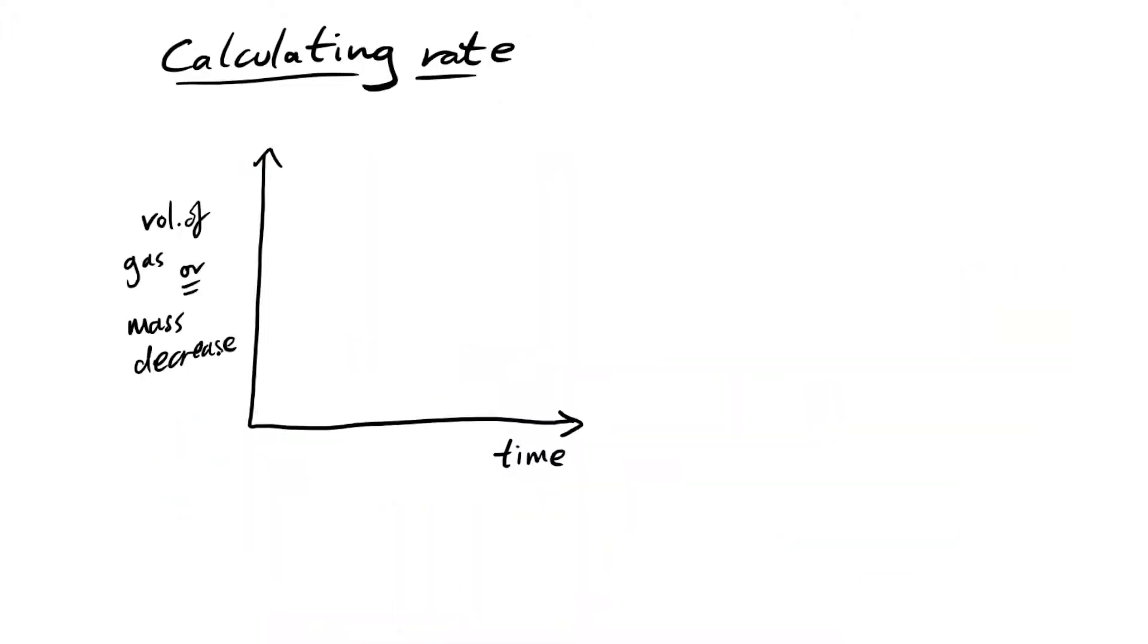So how do we actually calculate rate? Well, if we record the volume of gas produced or mass decrease over time for a reaction that has a constant rate of reaction, then we're going to get a straight line. Naturally, it's the gradient that gives you the rate of reaction. Make yourself a triangle. Of course, you can go right to the bottom. Make sure your triangle is more than half the size of the line, and then, as per usual, do change in y divided by change in x.